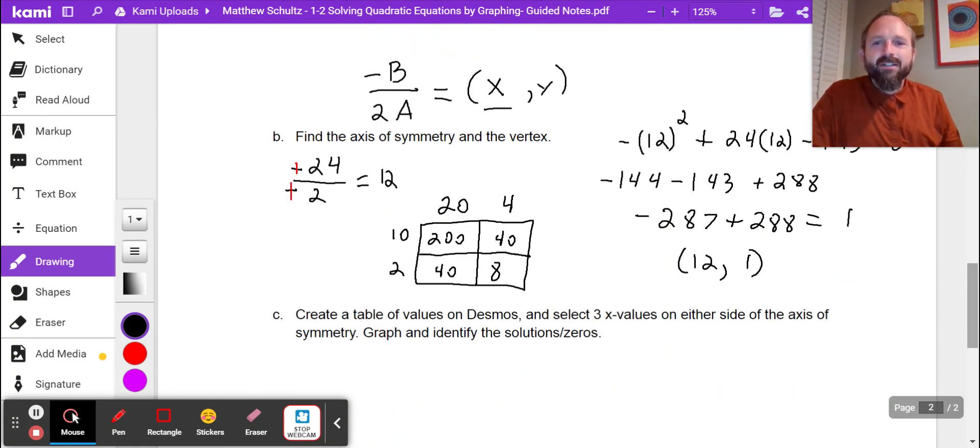I found my axis of symmetry when x is 12, and I found how high this is, it's at 1. Let's create a table of values in Desmos and select three x values on either side of the axis of symmetry. We're going to graph and identify the solutions and zeros.